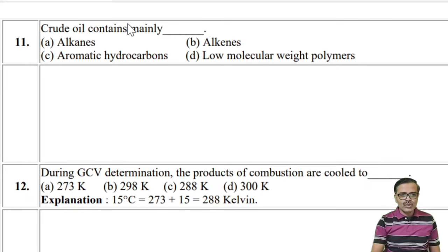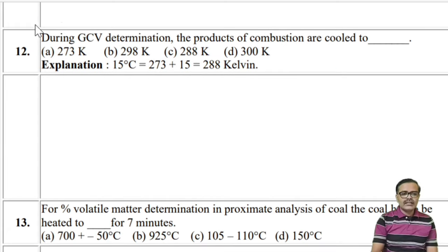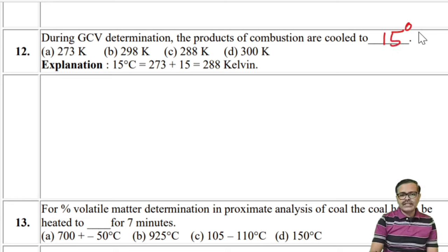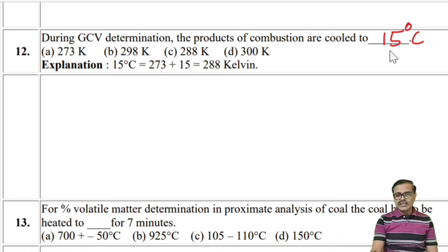Crude oil contains mainly alkanes, cycloalkanes, branched-chain alkanes, asphaltenes, etc. During the GCV determination, the products of combustion are cooled to 15°C. Converting: 15°C + 273 = 288 K. So the answer is 288 Kelvin.